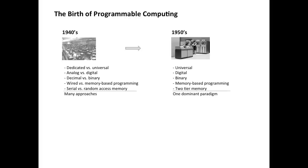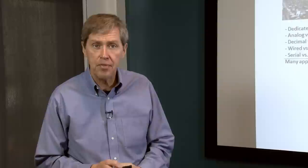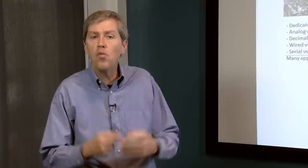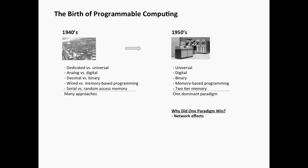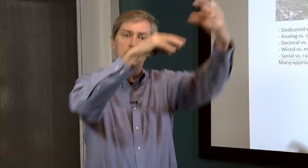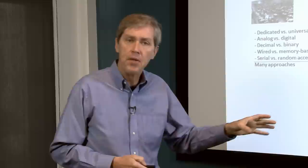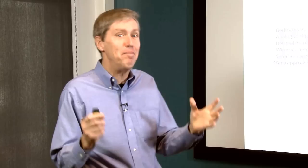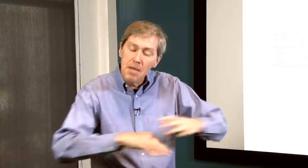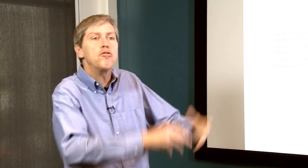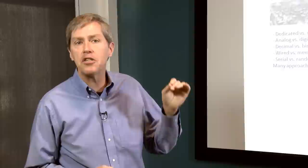As we left the 1940s and entered the 1950s, we settled on a single dominant paradigm for computing — the one we still use today. Universal machines, digital, binary, memory-based programming, a two-tier memory system — this is what we've built all computing on for the last 70 years. Why did one paradigm win? Network effects — once a leader emerges, more people invest in it and it gains momentum. This particular paradigm won because it was the most flexible and most scalable, applicable to many different problems.